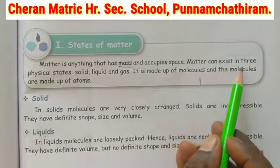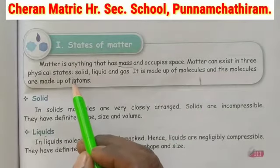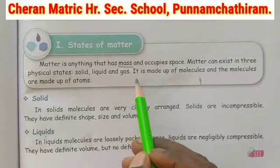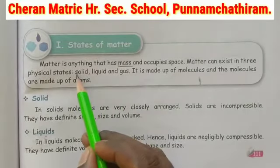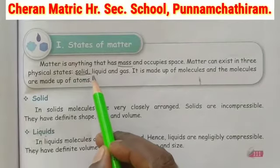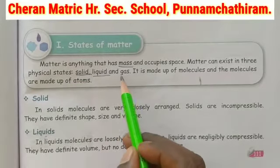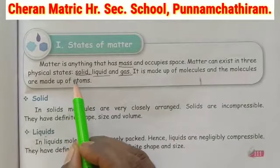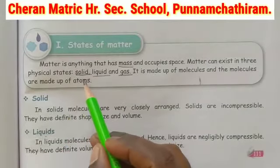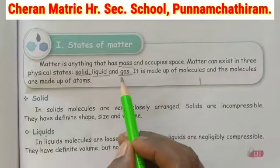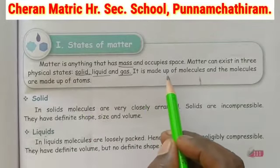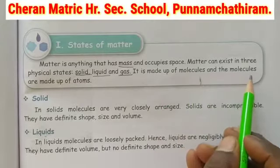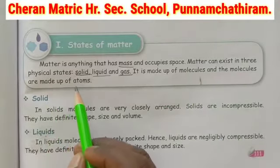Matter can exist in three physical states: solid, liquid, and gas. Matter is made up of molecules, and molecules are made up of atoms.